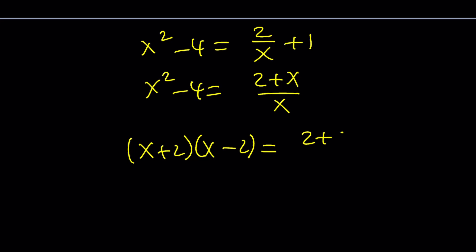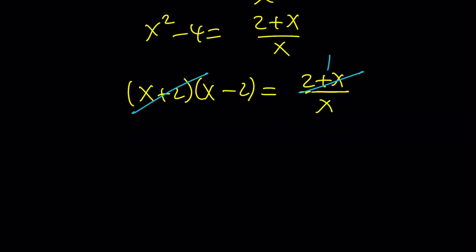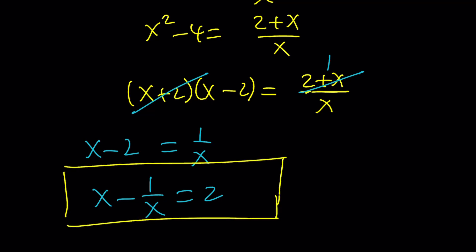This condition is important because if x equals negative 2, we're going to have 0 equals 0, and negative 2 obviously satisfies this equation. If x does not equal negative 2, then we can cancel it out, leaving us with the following. Our goal was to solve for x minus 1 over x. If you switch these terms around, you'll get the answer. So x minus 1 over x equals 2, if x does not equal negative 2.